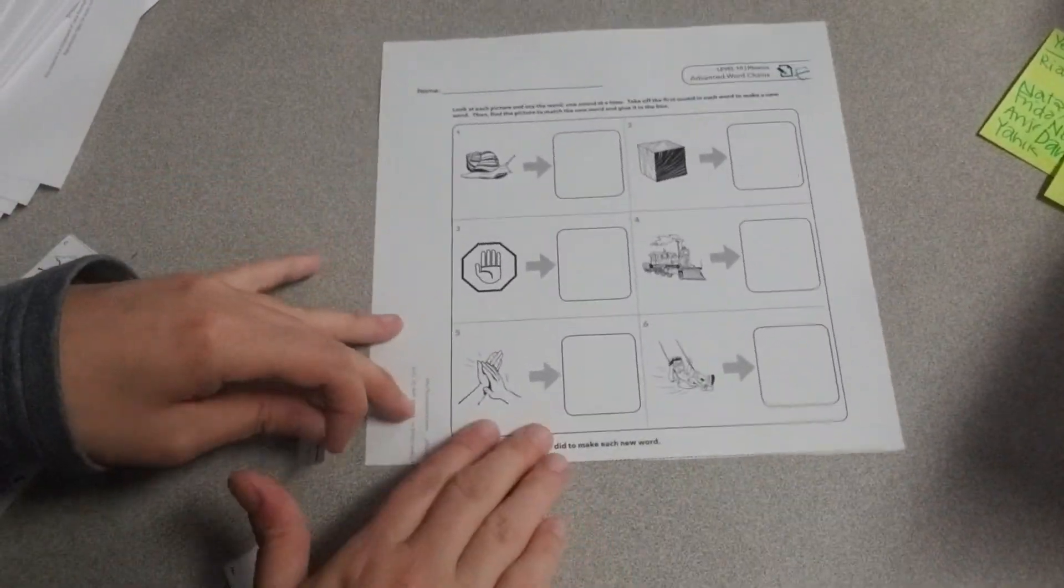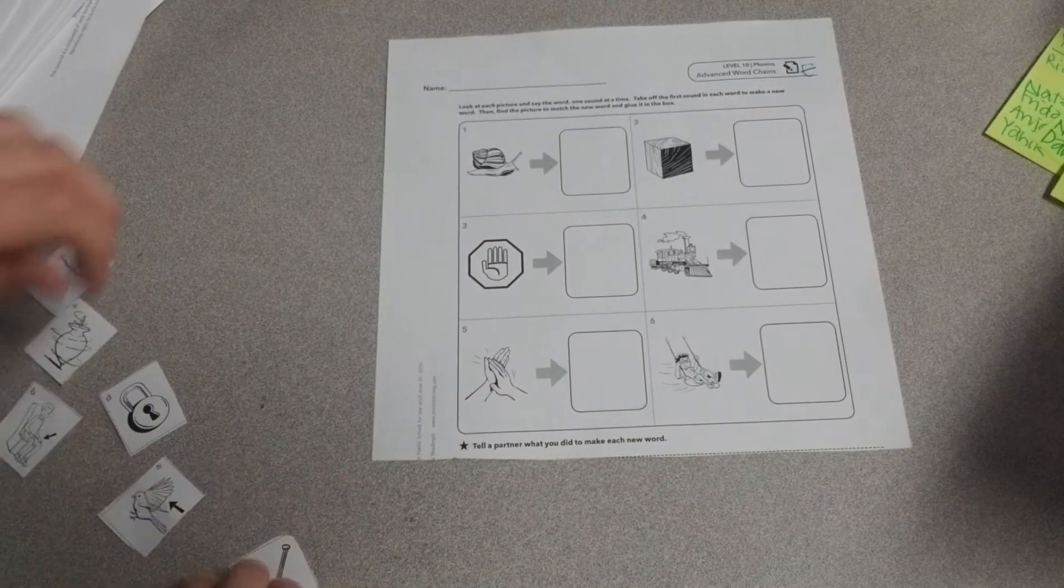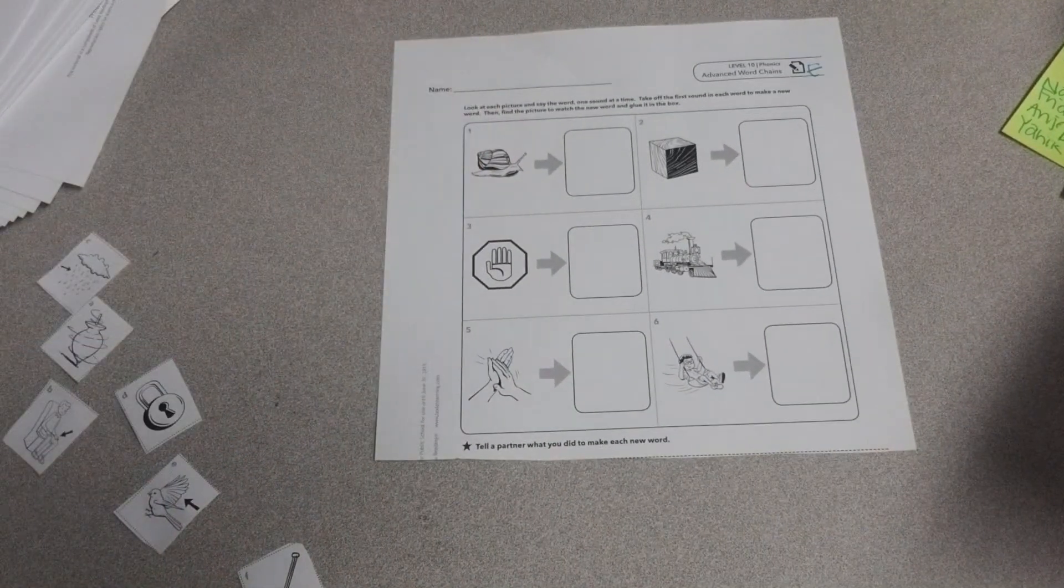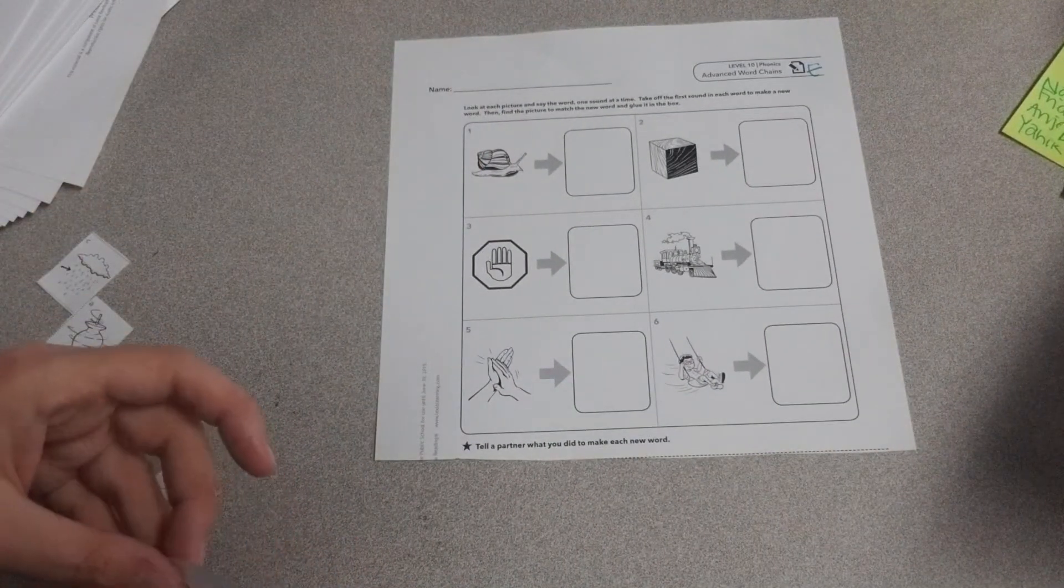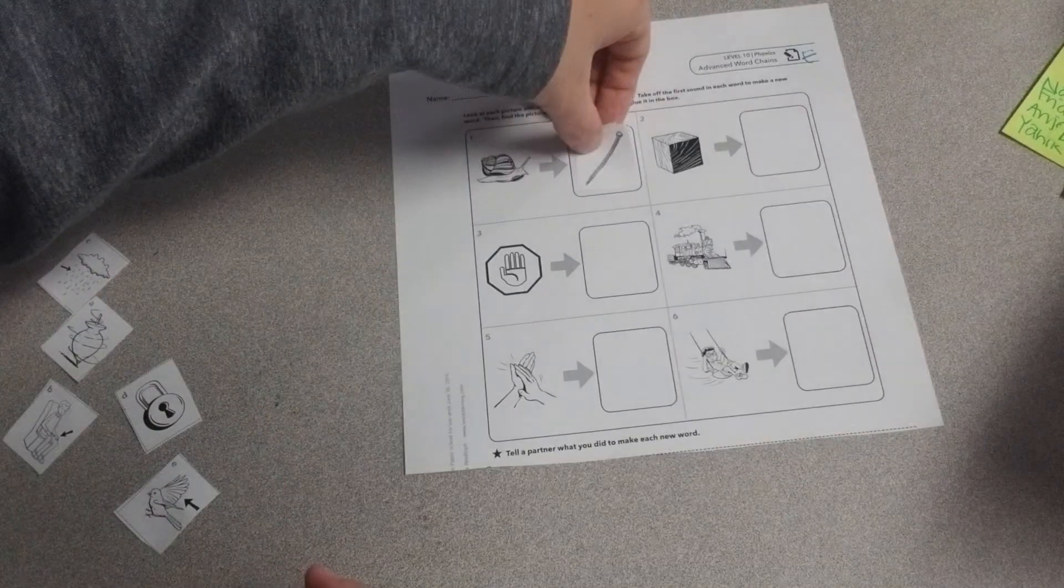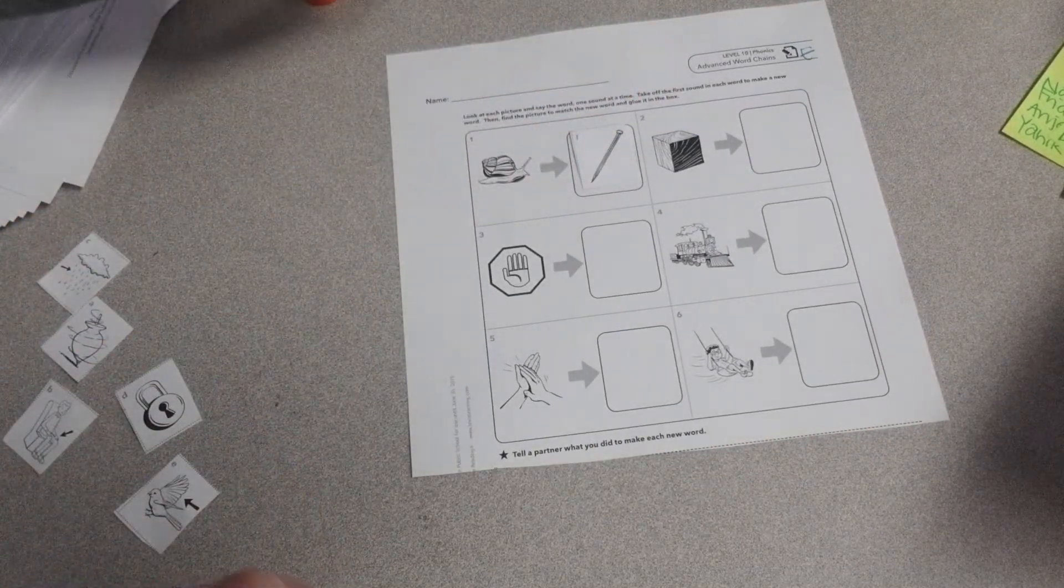I'm going to do the first one for us. This is snail. If I take a letter off of snail, I could get nail. So I'm going to put nail right here. I will glue that one down.